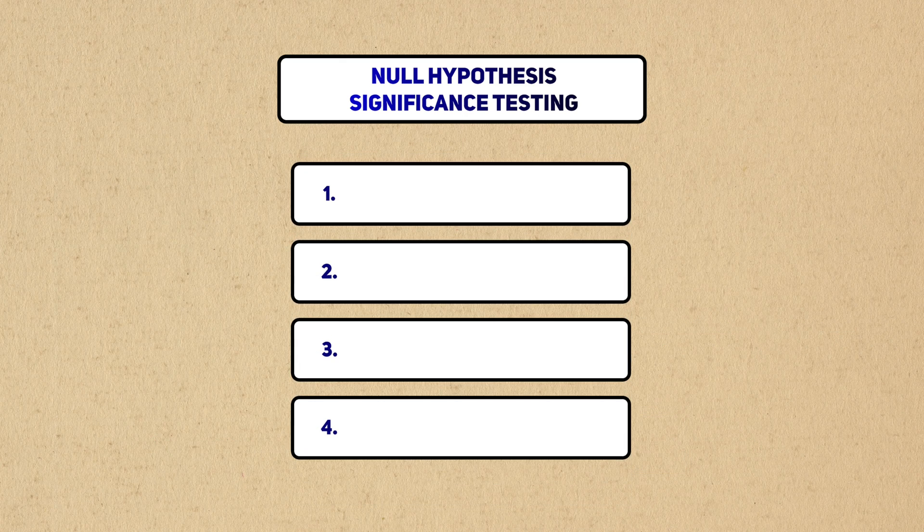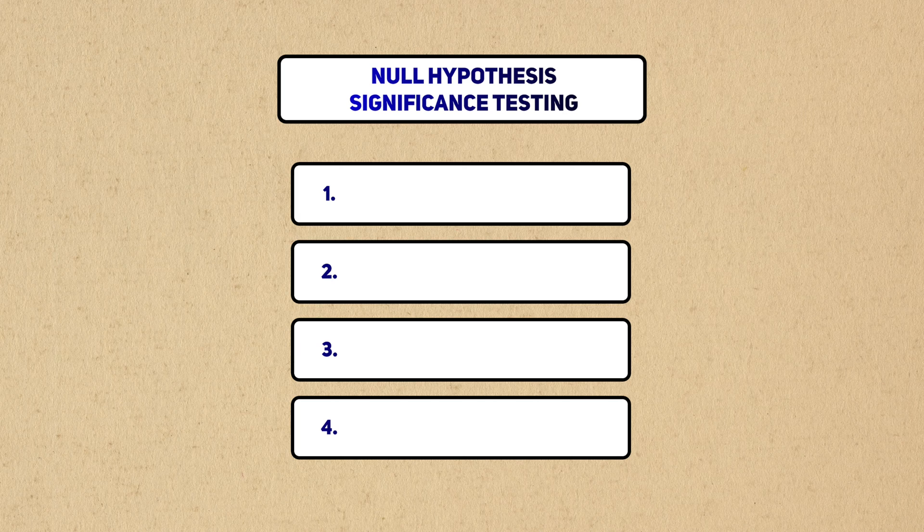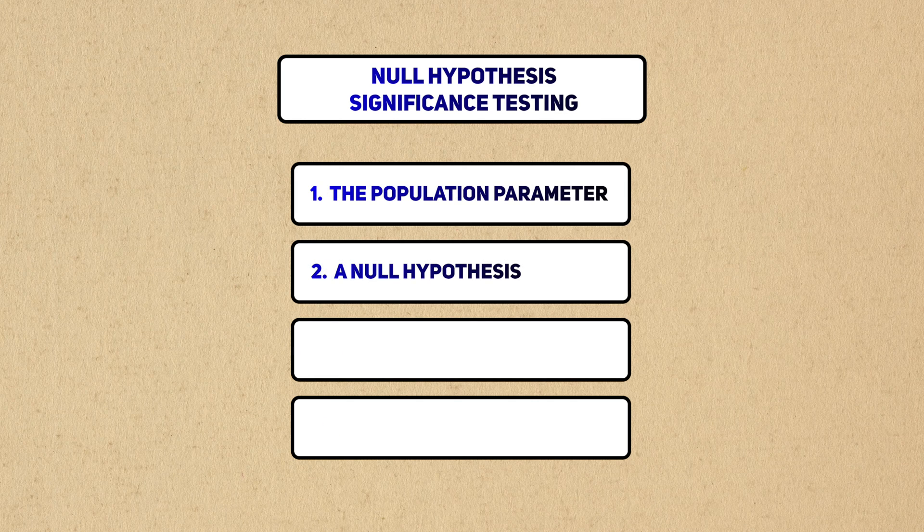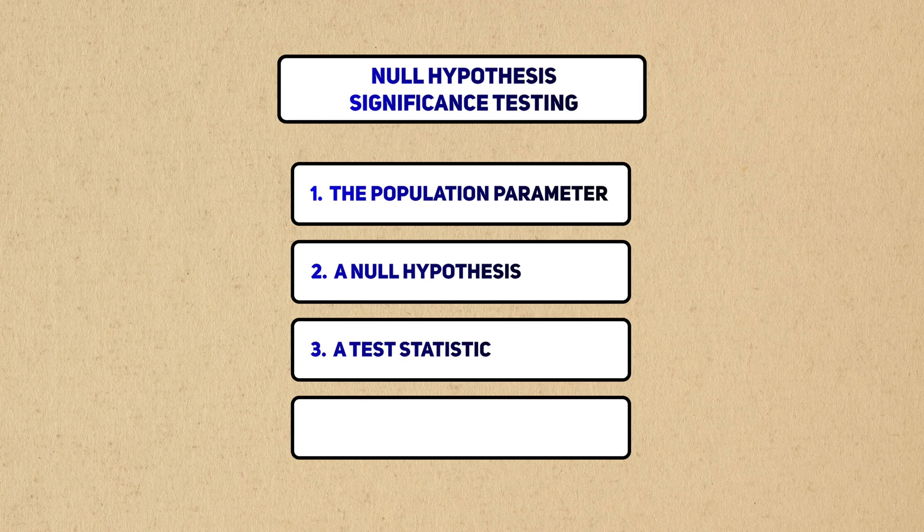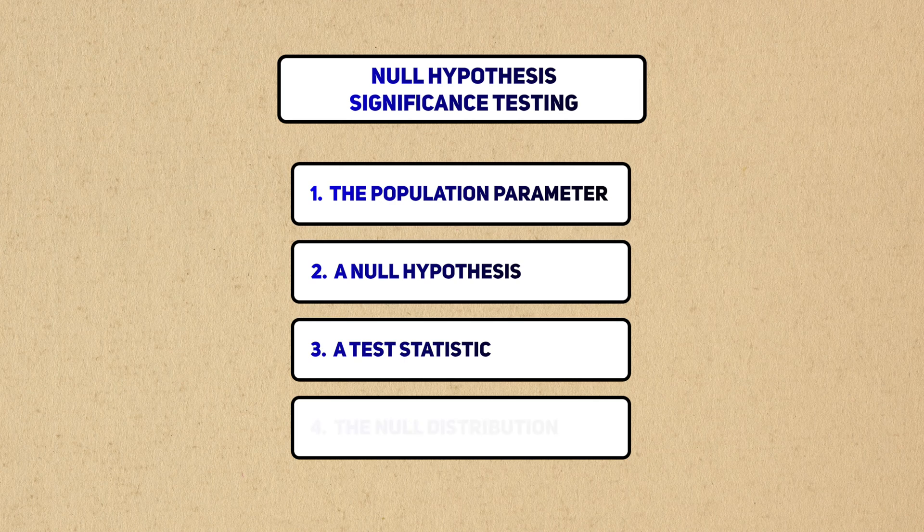That's a lot of ground we covered there, but here are the essential ingredients that we need to keep track of: population parameter, the null hypothesis, a test statistic that comes from actual data, and the null distribution of the statistic.